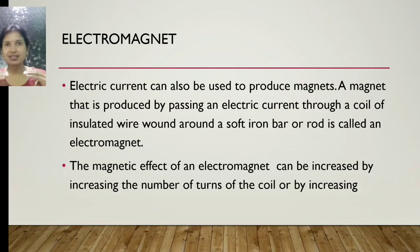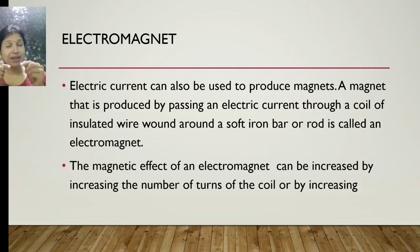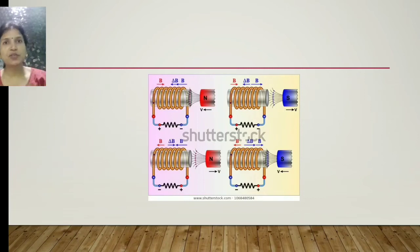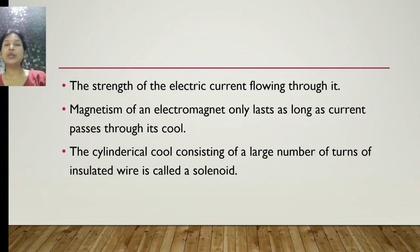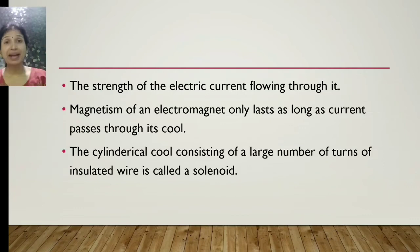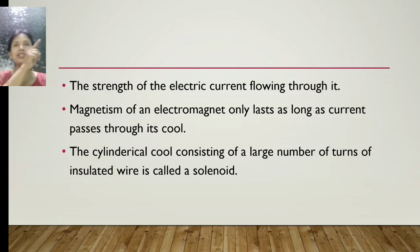This is a picture of an electromagnet — the insulated wire is wound around the rod as described. The strength of the electromagnet depends on the electric current flowing through it. The magnetism of an electromagnet only lasts as long as current passes through it — it is a temporary magnet.